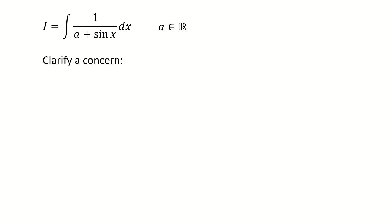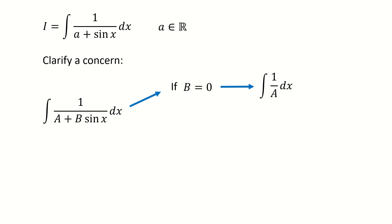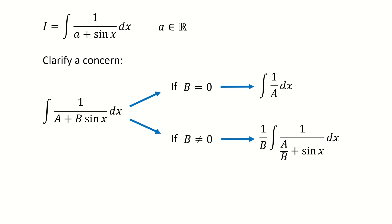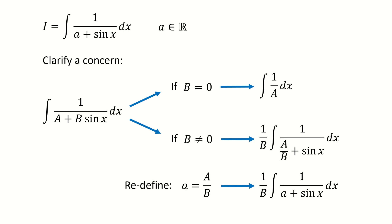First, let's clarify a concern here. For this integral, maybe you think the most general form should be written where the capital A and capital B are real numbers. So if B equals 0, then this integral reduces to an integral with respect to a constant, which is simple. If B is not equal to 0, then we can factor out B. If we redefine a as capital A over capital B, then we get the core form that we are solving for.